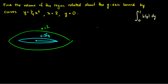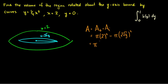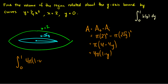To find the area between the two circles, we take the outer area minus the inner area: π·(2)² − π·(2√y)² = π(4 − 4y), which factors to 4π(1 − y). Now we just integrate that from zero to one: ∫₀¹ 4π(1 − y) dy.